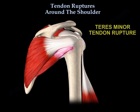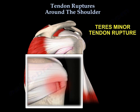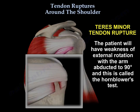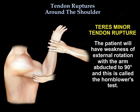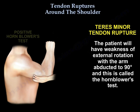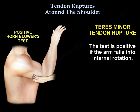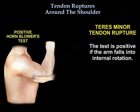This rupture may also include the tendon of the teres minor. The patient will have weakness of external rotation with the arm abducted to 90 degrees, and this is called the horn blower test. A positive test occurs if the arm falls into internal rotation.